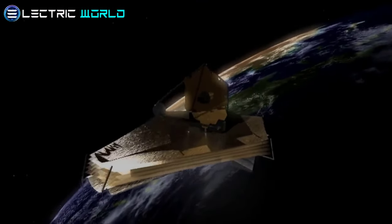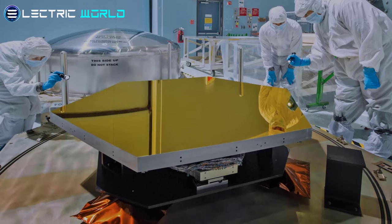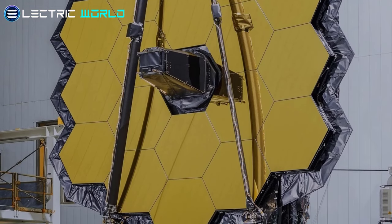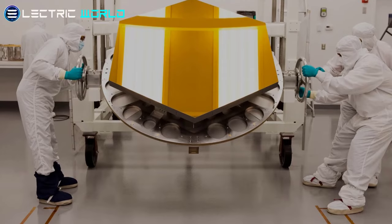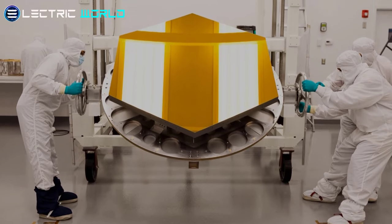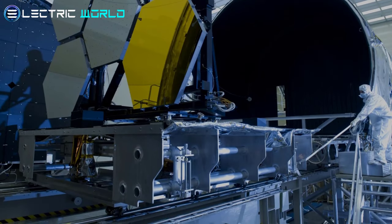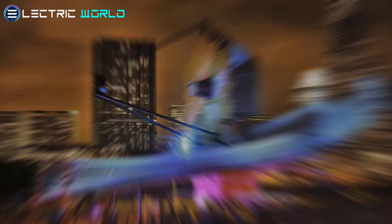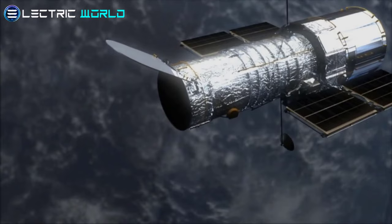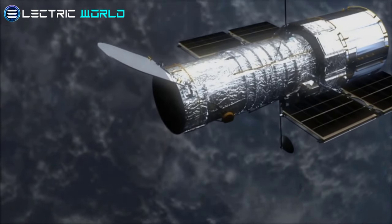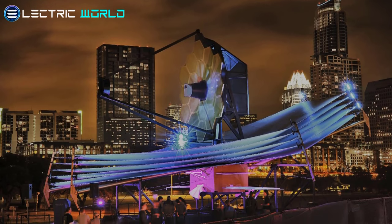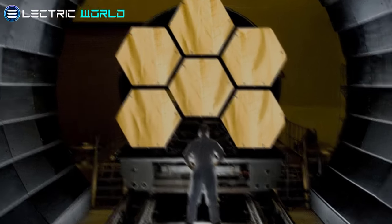The James Webb Space Telescope is a space telescope that was built mainly for infrared astronomy. As the biggest optical telescope in space, its high infrared resolution and sensitivity enable it to see objects too early, distant, or faint that the Hubble Space Telescope cannot see. Looking back in time to when galaxies were first formed is one of the goals of the telescope. Webb will do this by observing galaxies located more than 13 billion light years away from Earth. When a telescope observes objects that are farther distant from Earth, it is also effectively looking back in time.